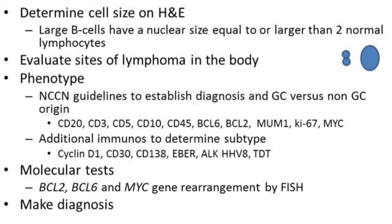The most important point is that we have to determine what the cell size is on H&E. By definition, we say that large B-cells have a nuclear size that is equal to or larger than two normal lymphocytes.